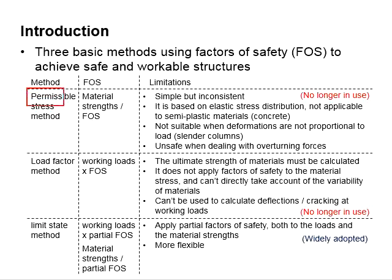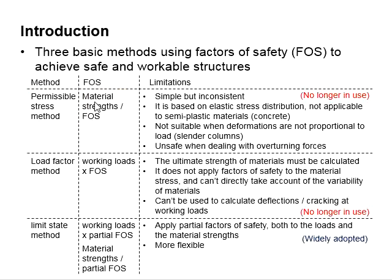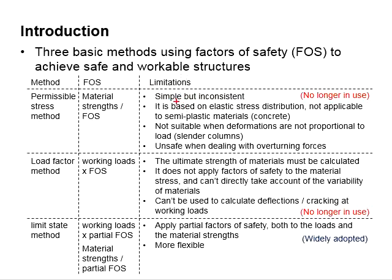The permissible stress method applies the factor of safety by dividing the material strength by the factor of safety. That means we assume the strength of the material is slightly lower than its original strength. However, this method has some limitations — it is simple but inconsistent, and it is based on elastic stress distributions, making it not applicable for semi-plastic materials such as concrete.